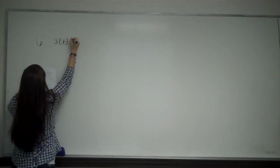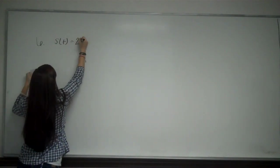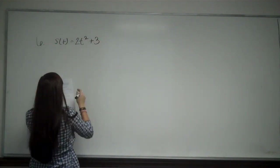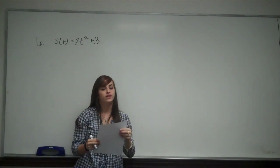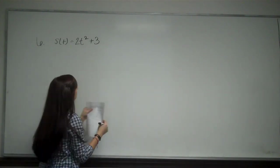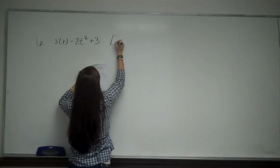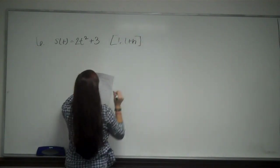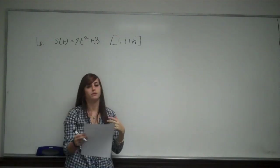S of t equals 2t squared plus 3. Find a formula for the average velocity of the object on the interval from 1 to 1 plus h, and the instantaneous velocity after 1 second.